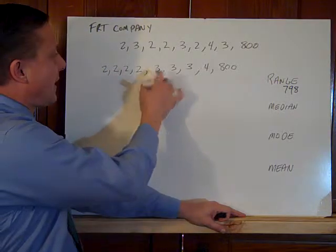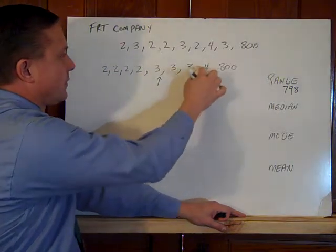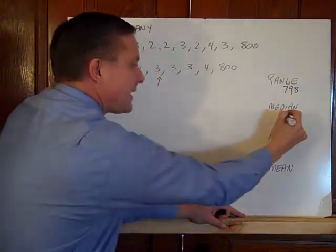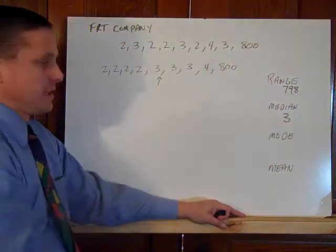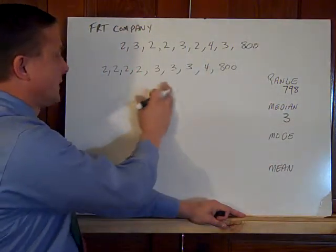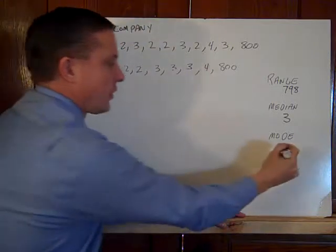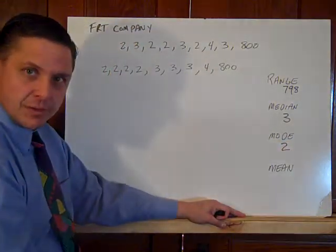My median, the middle number, is three. My mode - I see that two occurs four times. So my mode is two pounds.